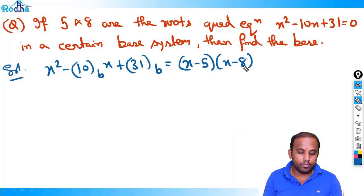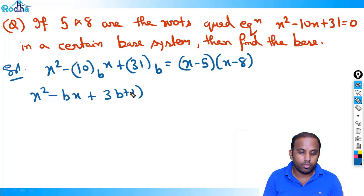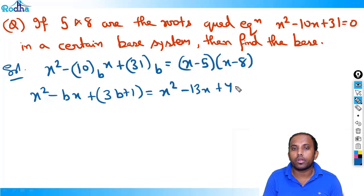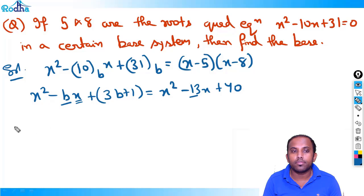Solving (x-5)(x-8), we get x² - 13x + 40. On the left side, expanding with base B: x² - Bx + (3B+1). Comparing coefficients of x: B = 13.